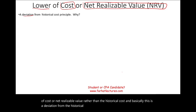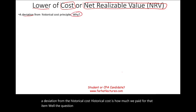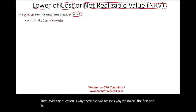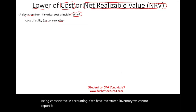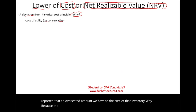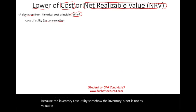Historical cost is how much we paid for that item. There are two reasons why we do so. The first one is being conservative. In accounting, if we have overstated inventory, we cannot report it at an overstated amount. We have to reduce the cost of that inventory, because the inventory lost utility — somehow, the inventory is not as valuable as it was when we originally purchased it. It could be for many reasons.